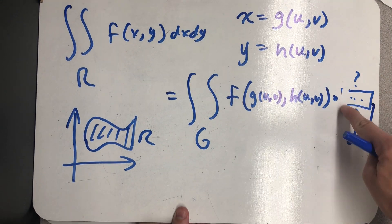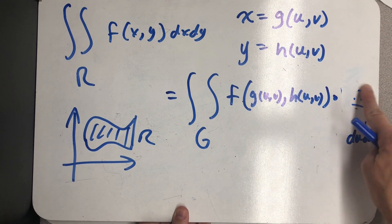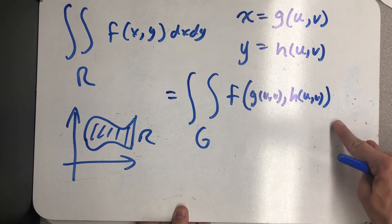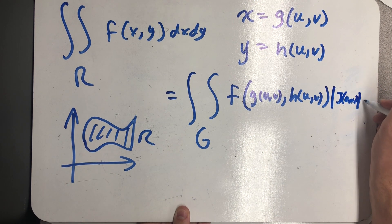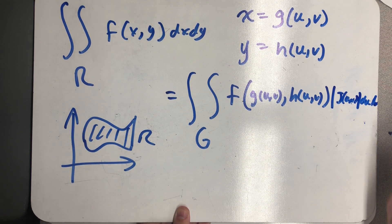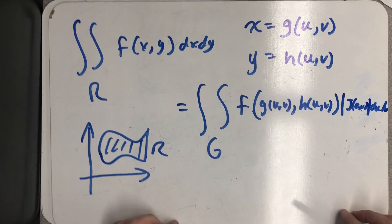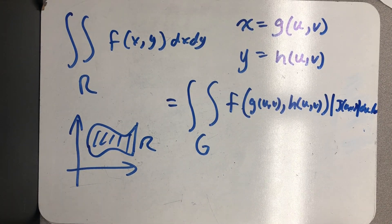But I need to be careful because if I change rows, my signs could change. So this is actually the absolute value of J of (u,v) du dv. And of course, we could think about changing the order of integration in the same way as we have so far.